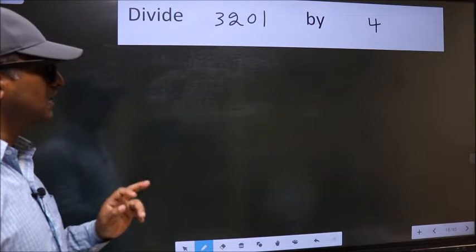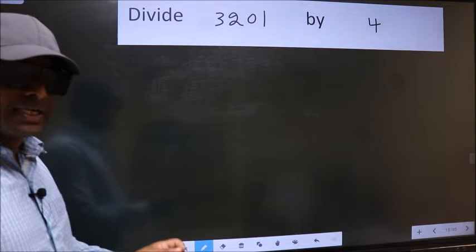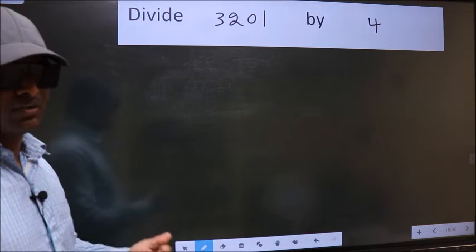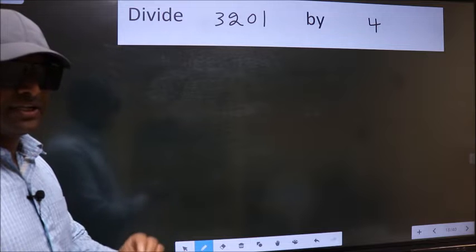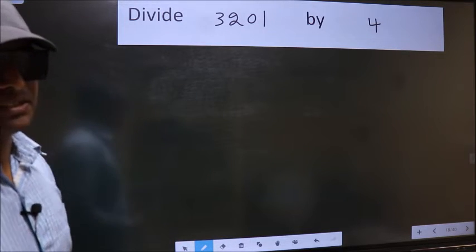Divide 3201 by 4. While doing this division, many make this mistake. What is the mistake that they do? I will let you know. But before that, we should frame it in this way.